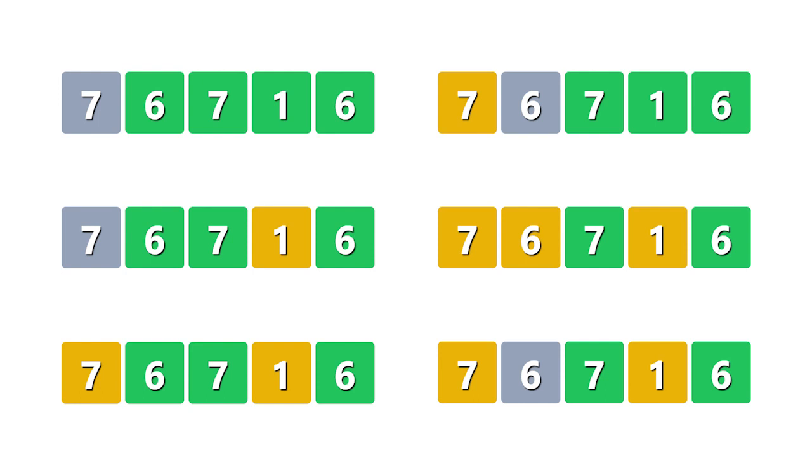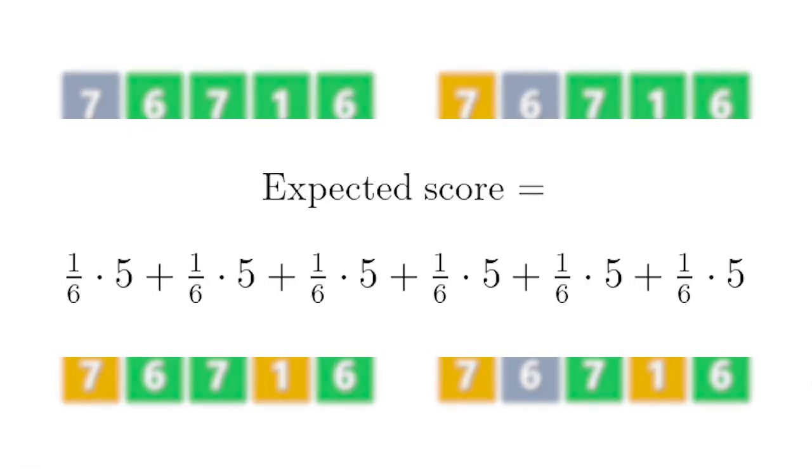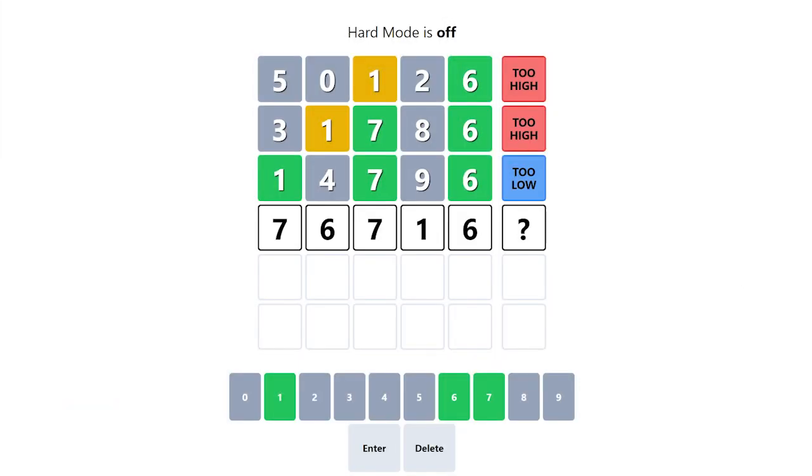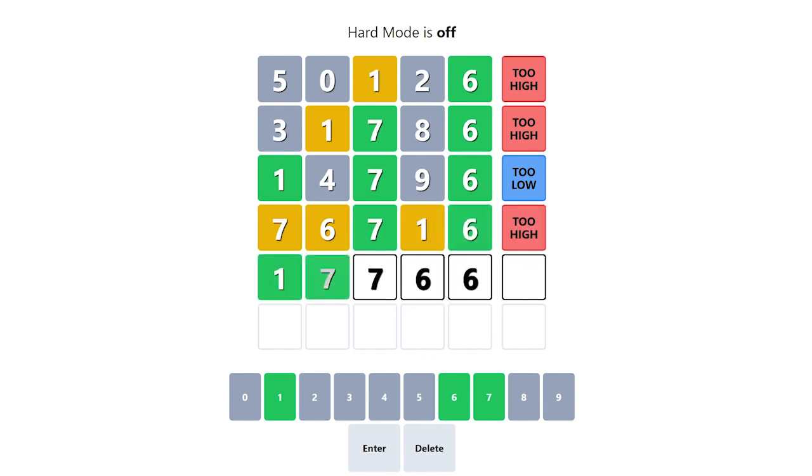And each of the remaining solutions has a 1 in 6 chance to be the actual solution, so the expected score is also 5. So let's play this one out, and we get it in 5 as predicted.